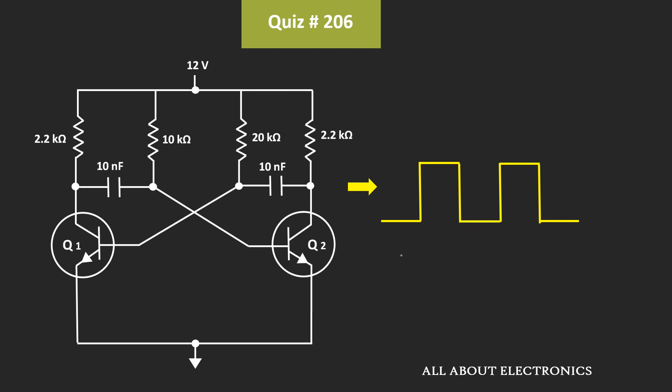So if we see in terms of the frequency, then the frequency f is equal to 1 by T. That is equal to 1 divided by 0.208 ms, and that is equal to 4.81 kHz.